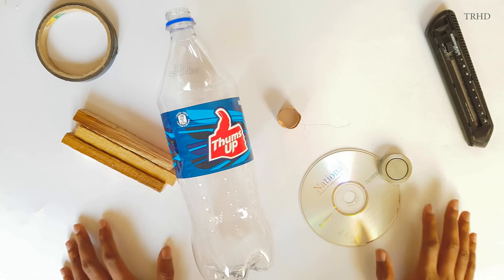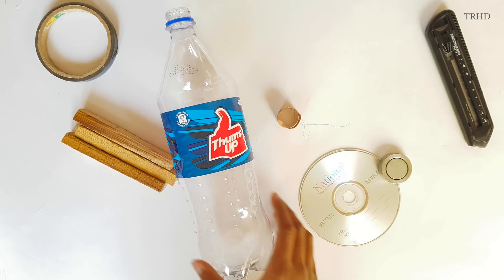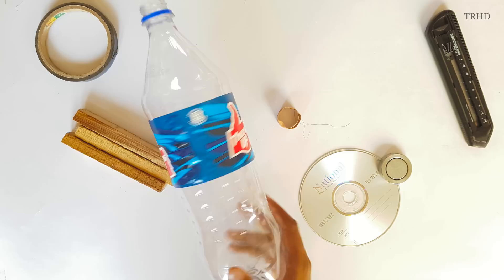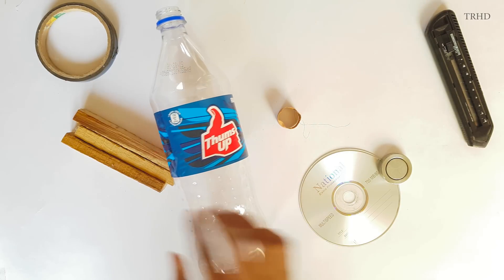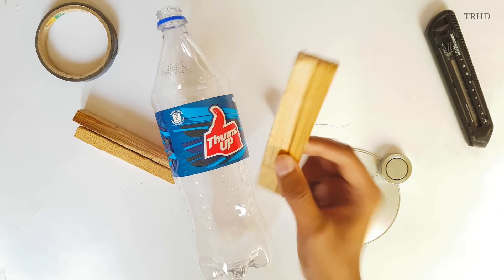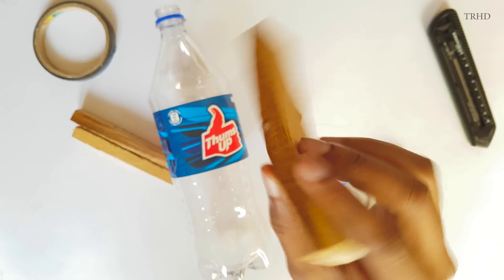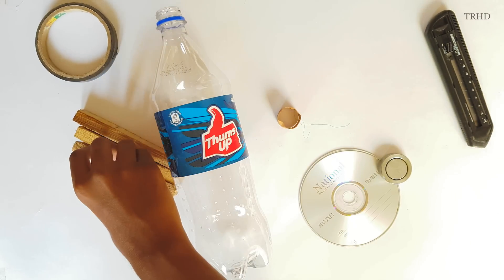So to make a speaker at your home, these are the components you'll need. You'll need a plastic bottle. I've used a Thumbs Up bottle, but you can use any kind of plastic bottle. You'll need three wooden pieces which I'll be using to support the plastic cone that I'll make using this bottle.